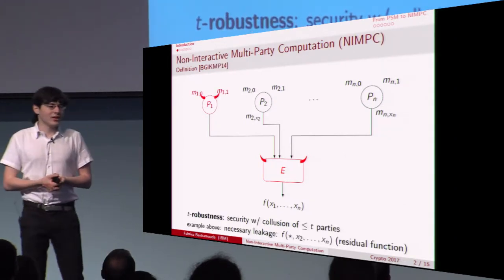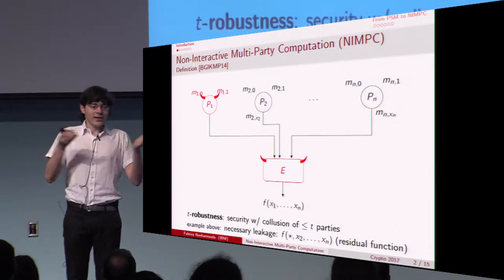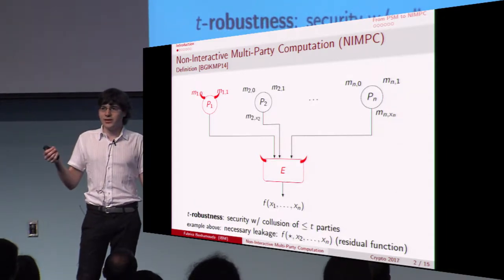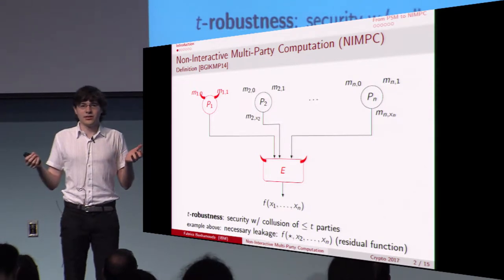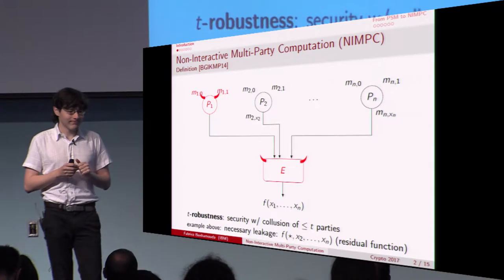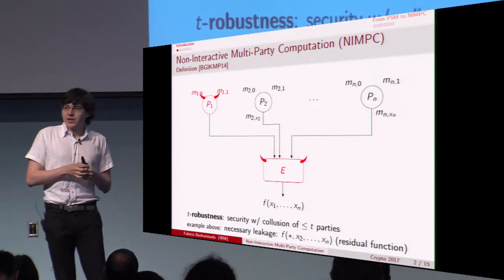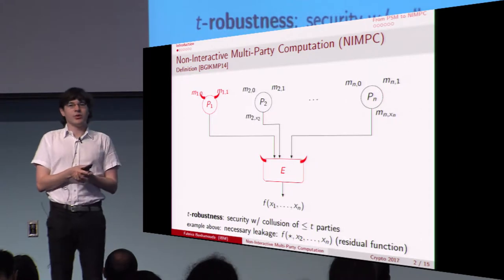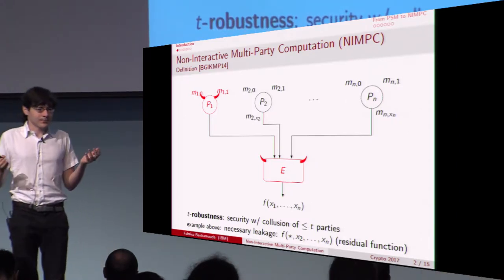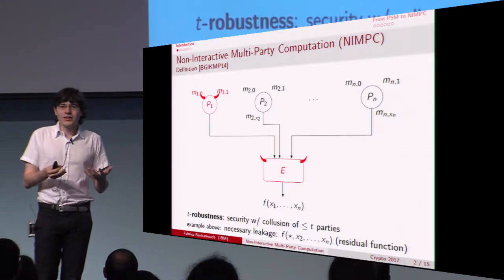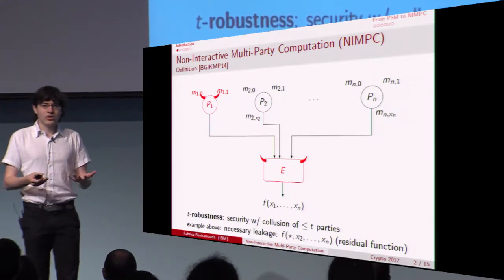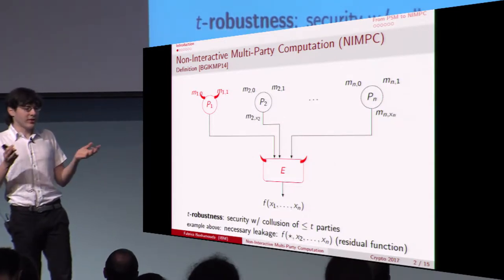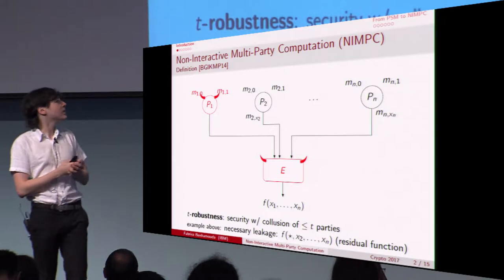Suppose for example that p1 colludes with the evaluator. In that case, p1 and the evaluator can evaluate the function on both f(0, x2, ..., xn) and f(1, x2, ..., xn). This is due to the fact that the protocol is completely non-interactive. What Bemel et al. introduced in 2014 is the notion of Robust Non-Interactive Multi-Party Computation (NIMPC), which says that the colluding parties and the evaluator should not learn more than these values — called the residual function for the colluding parties.